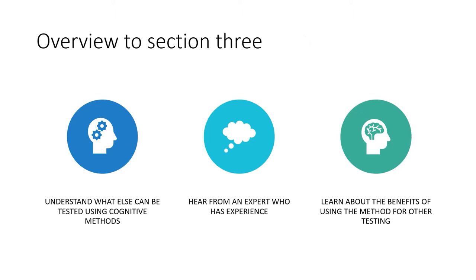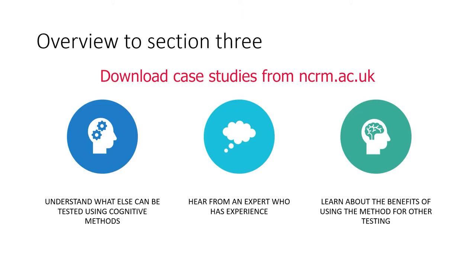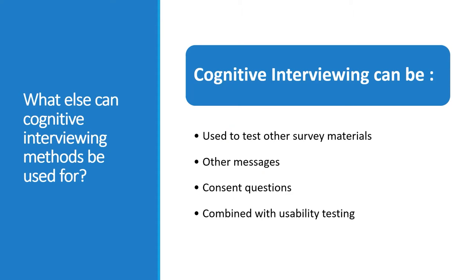In this section we will explore what else cognitive testing methods can be used for, and there are also case studies to be read about various projects we have carried out. Cognitive interviewing methods can be used to test other survey materials such as advanced letters and leaflets, other messages such as health information leaflets or messages on slot machines, consent questions such as consent to recontact, consent to carry out further research with someone or consent to data linkage. Cognitive interviewing methods can also be combined with usability testing to look at web questionnaires, websites or other documents.